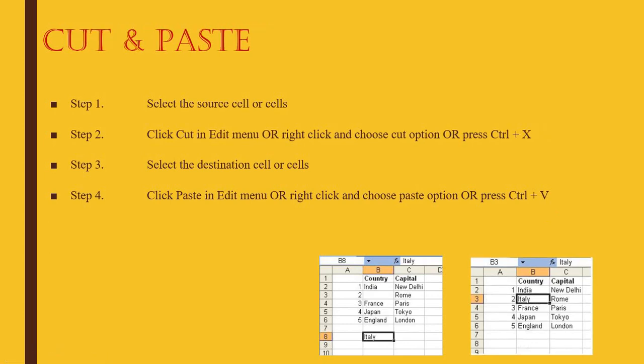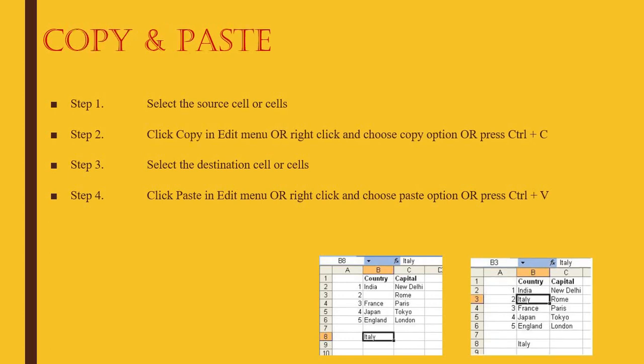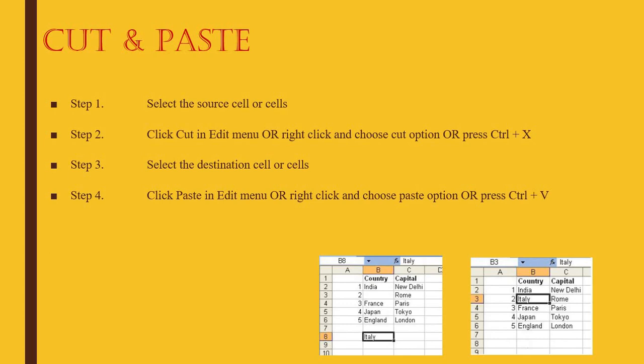Cut and paste is similar but not the same as copy and paste. When you copy, the content appears in both the source and destination. But if you cut it, the source place no longer has it. The shortcut is Ctrl+X, or you can right-click and choose Cut, or use the Edit menu.